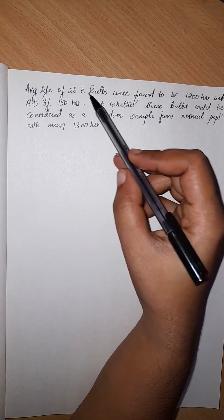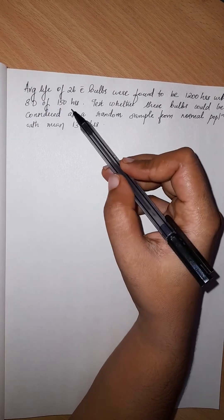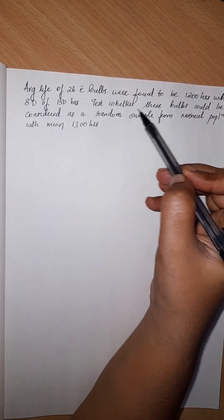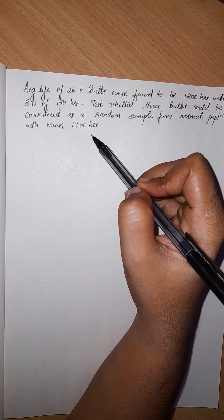The average life of 26 electric bulbs were found to be 1200 hours with a standard deviation of 150 hours. Test whether these bulbs could be considered as a random sample from a normal population with a mean of 1300 hours.